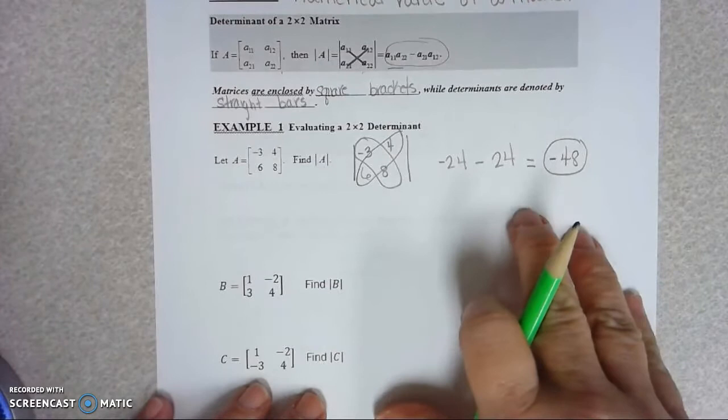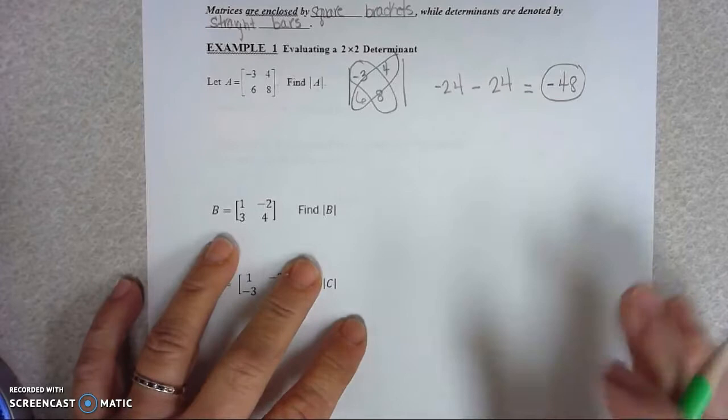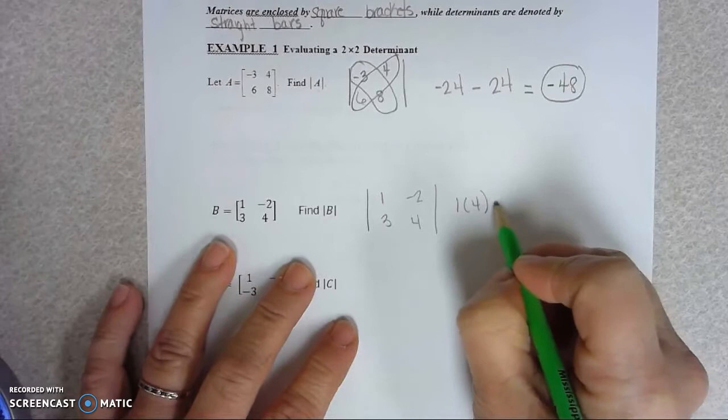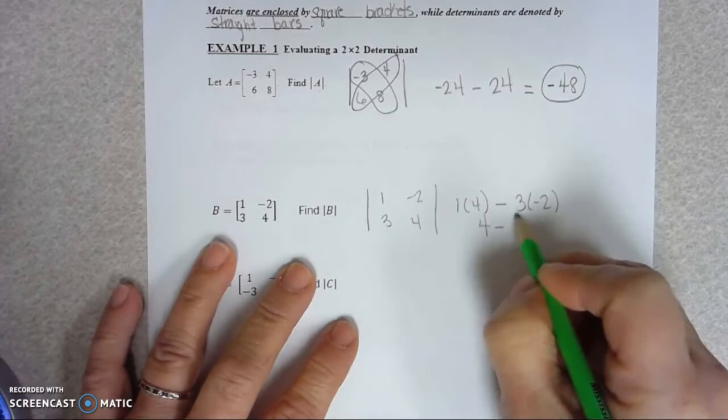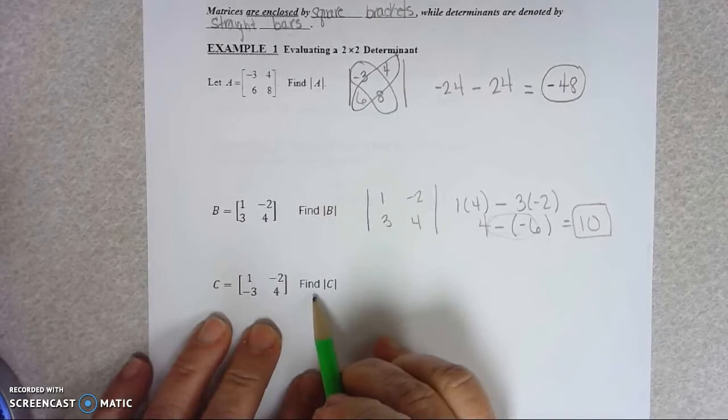Now we do things with determinants. And we're going to do that in just a second with Cramer's rule. But you have to know how to find it first. Let's look at matrix B. If we want to find the determinant of matrix B, so one times four minus three times negative two. Four minus negative six would be 10.